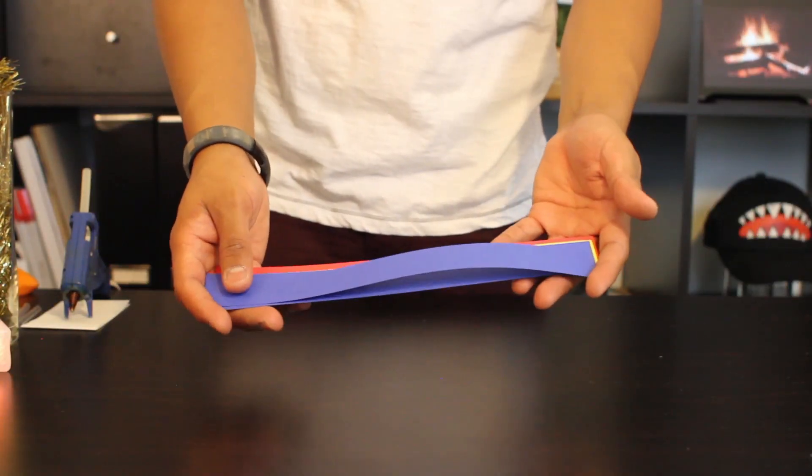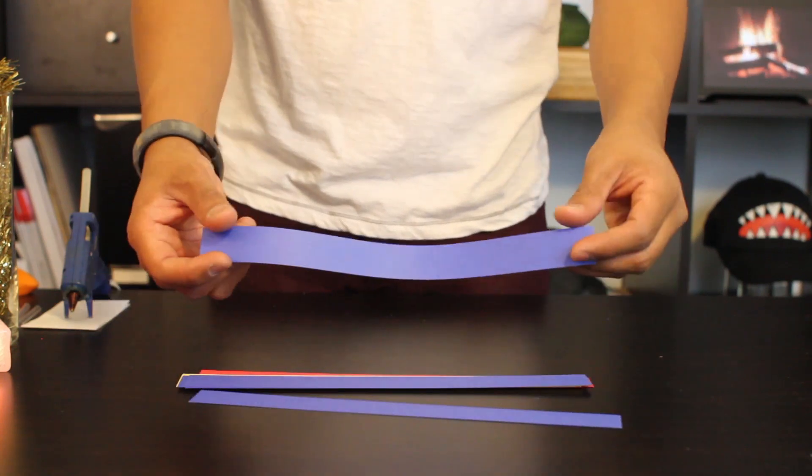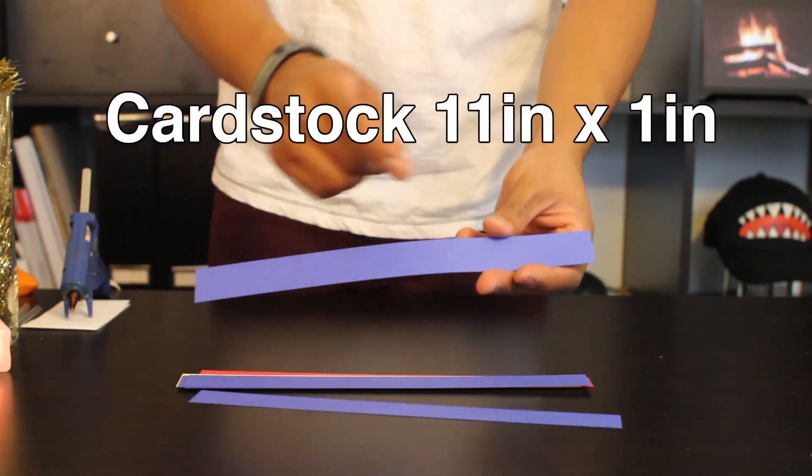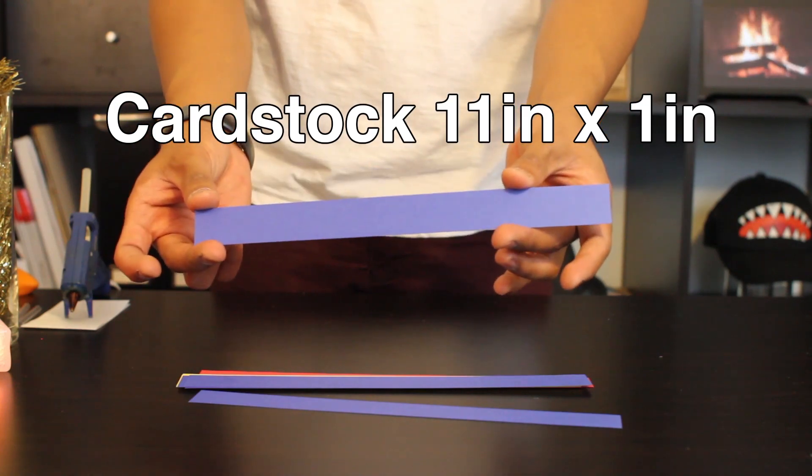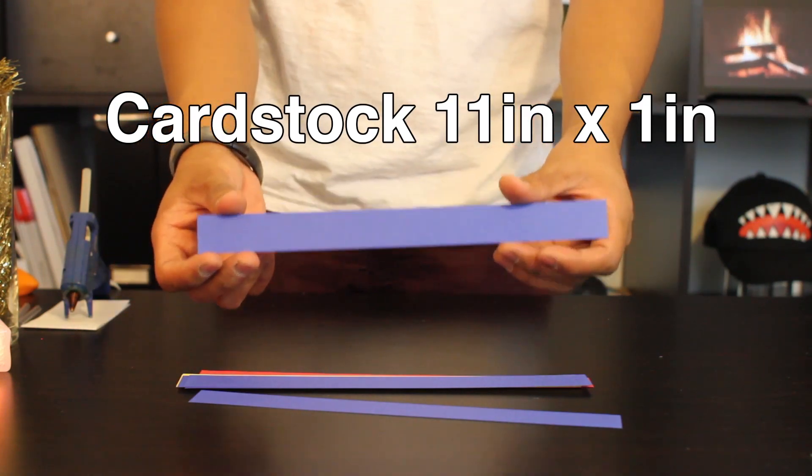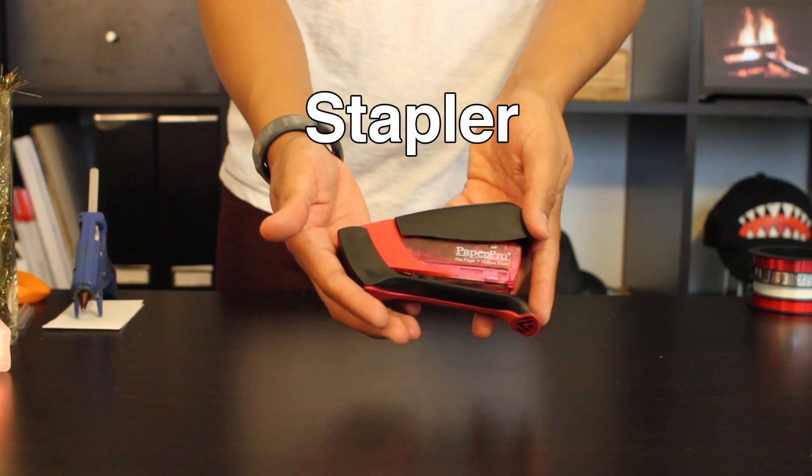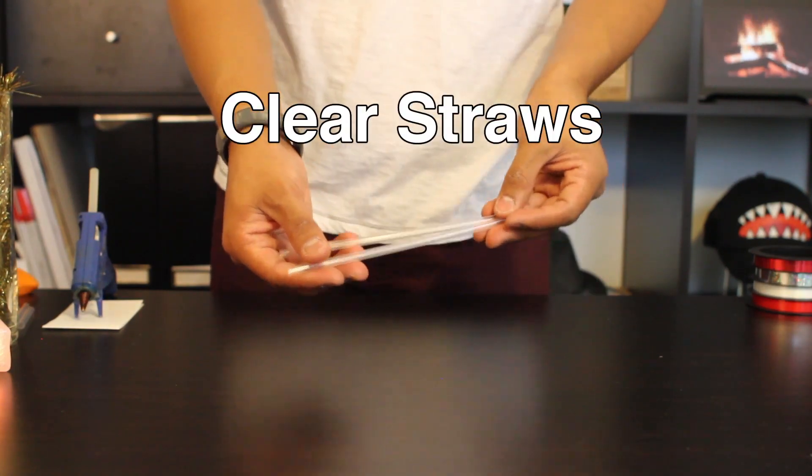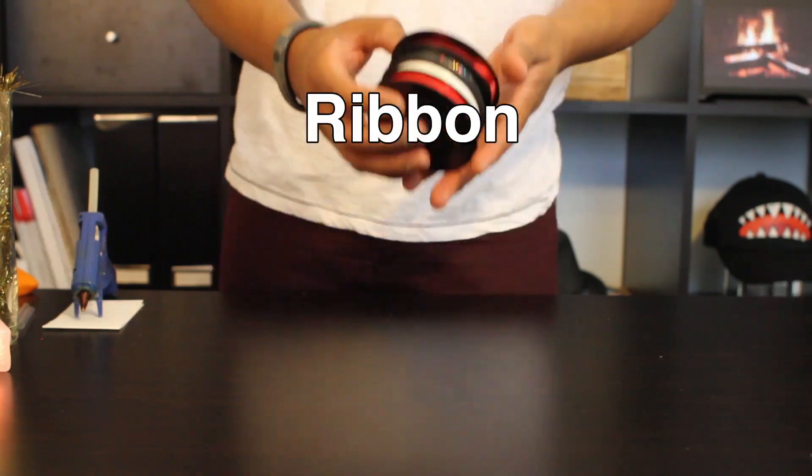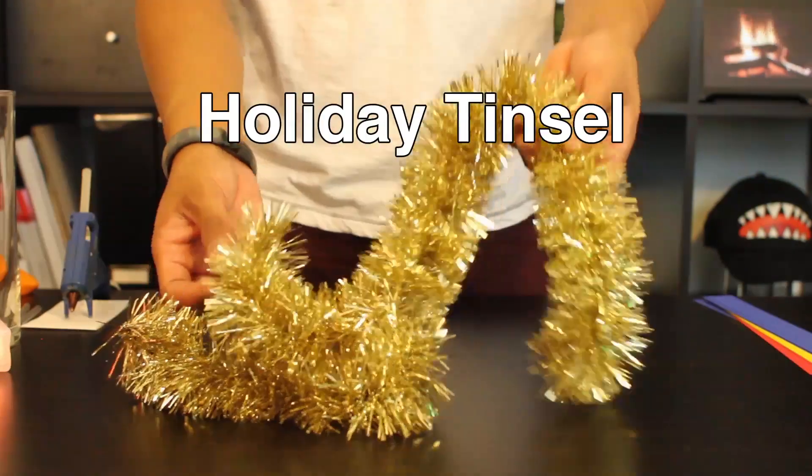The items you'll need for today's project include strips of 11 by 1 inch pieces of cardstock. You'll need about 10 of these to complete your star. A stapler, some paper clips, scissors, a few clear plastic straws, some ribbon for hanging, and holiday tinsel.